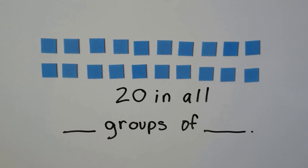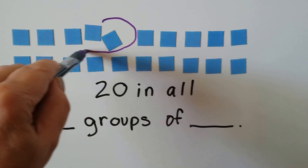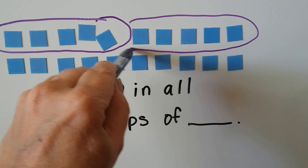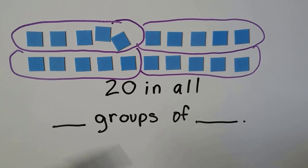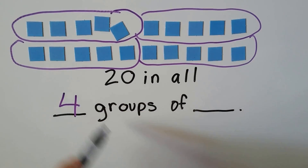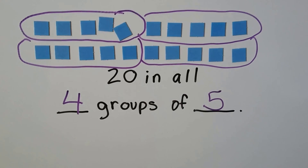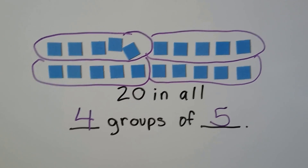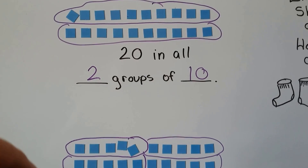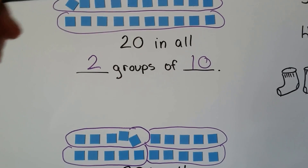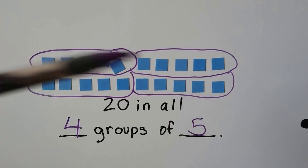Now we have twenty again. How else can we divide this? What if we did groups of five — five, and five, and five, and five. Now we have four groups, and there's five in each group. Twenty divided by four will equal five. We really just took the group of ten and cut it in half to make two more, so that's four groups instead of two groups. We just split it and turned it into four groups with five in each one, because five and five is ten.